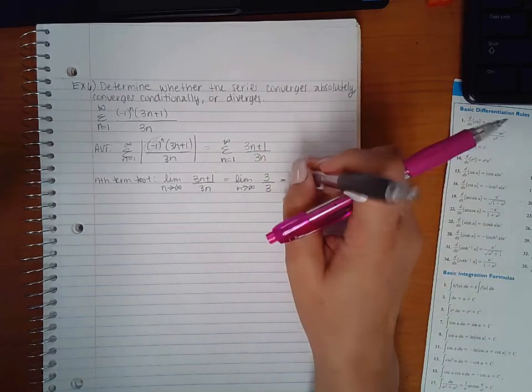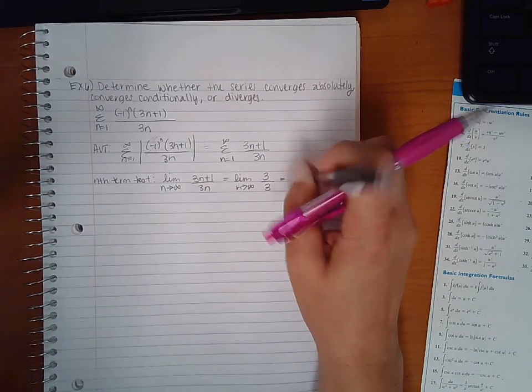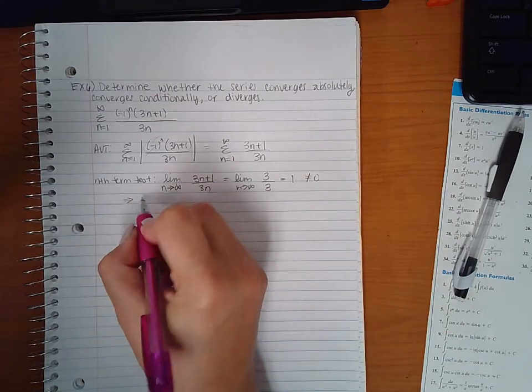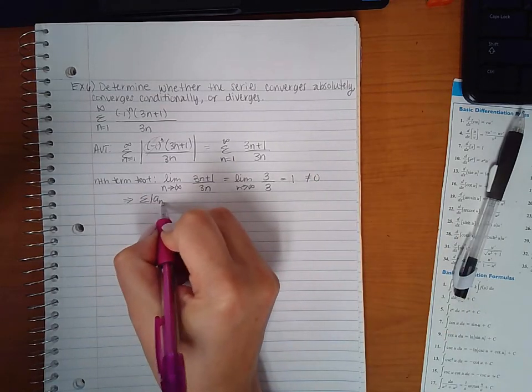But if that limit equals 1, and it's not 0, then that means that it diverges. So this guy diverges.